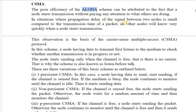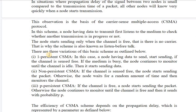In situations where the propagation delay between two nodes is small compared to packet transmission time, all other nodes will know very quickly when a node starts transmission. In CSMA, the node with data first listens to the medium to check whether another transmission is in progress and starts sending only when the channel is free — there is no carrier. This scheme is also known as listen before talk.